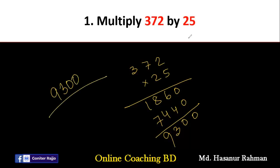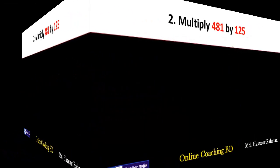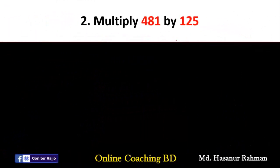This is the solution to the first question. Now number 2 says: multiply 481 by 125. 481 multiplied by 125.